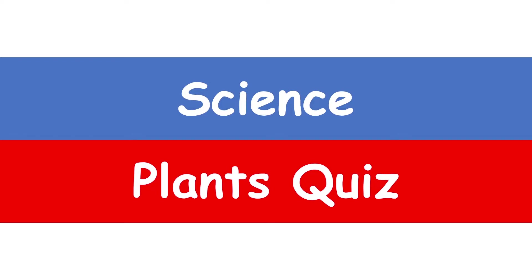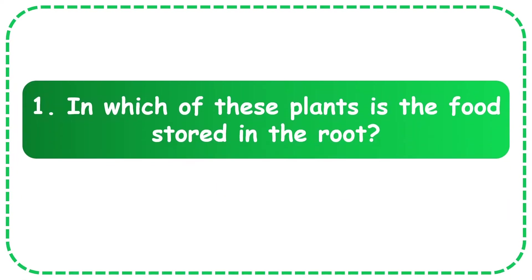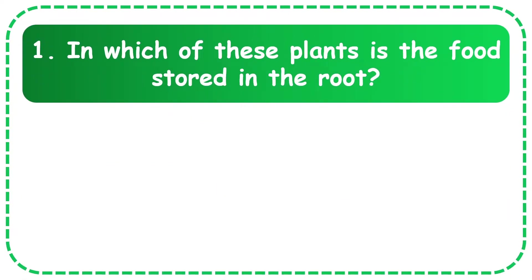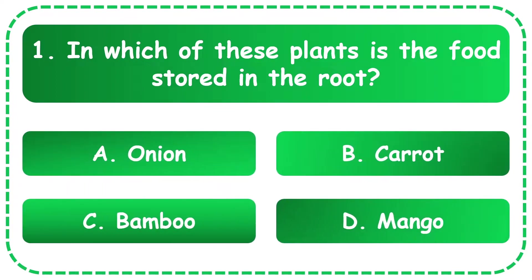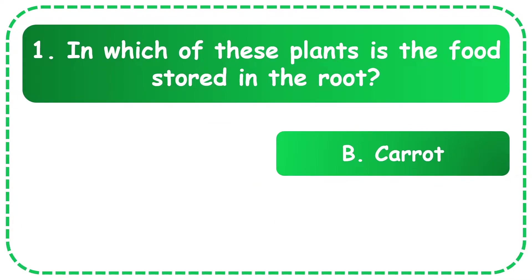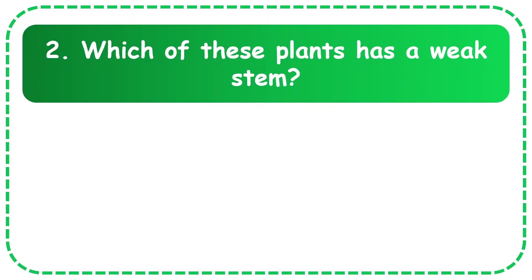Science plants quiz. Question 1: In which of these plants is the food stored in the root? The options are onion, carrot, bamboo, and mango. The correct answer is carrot.